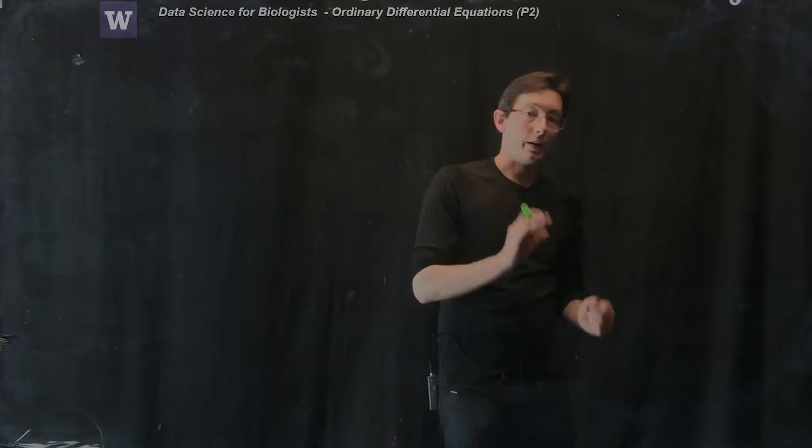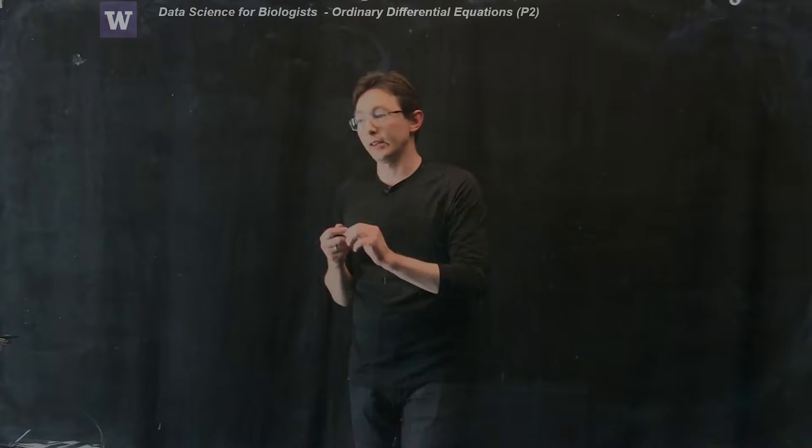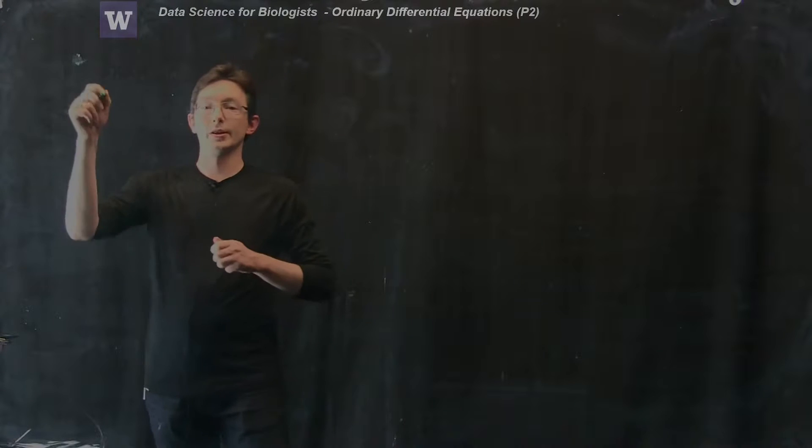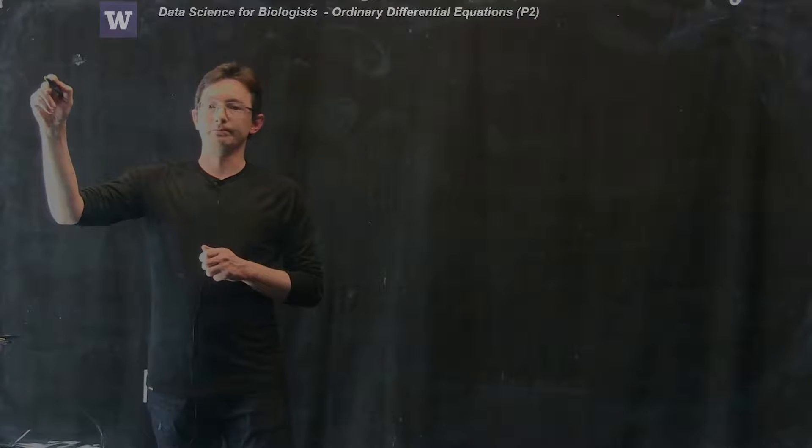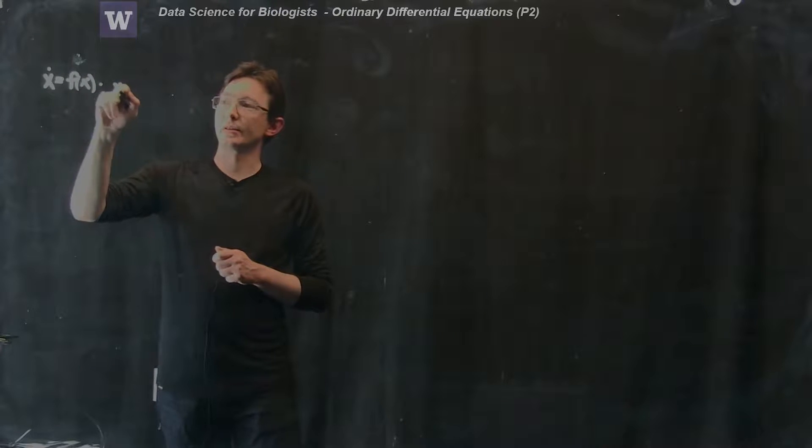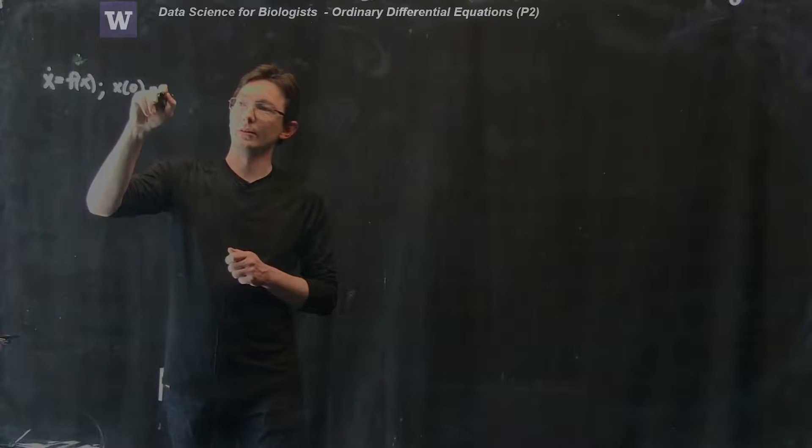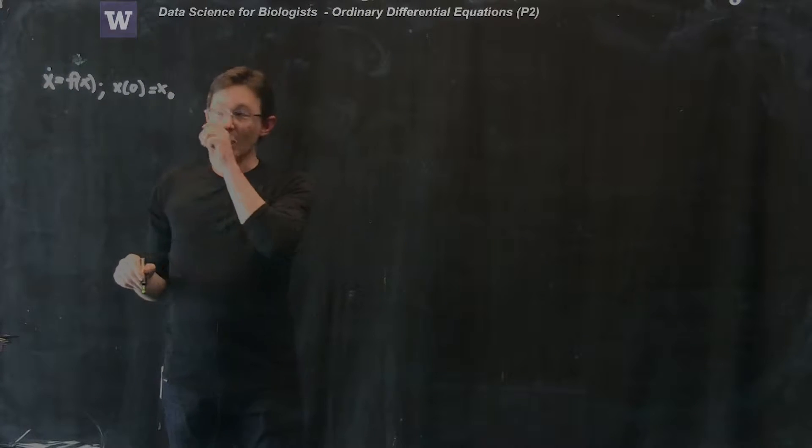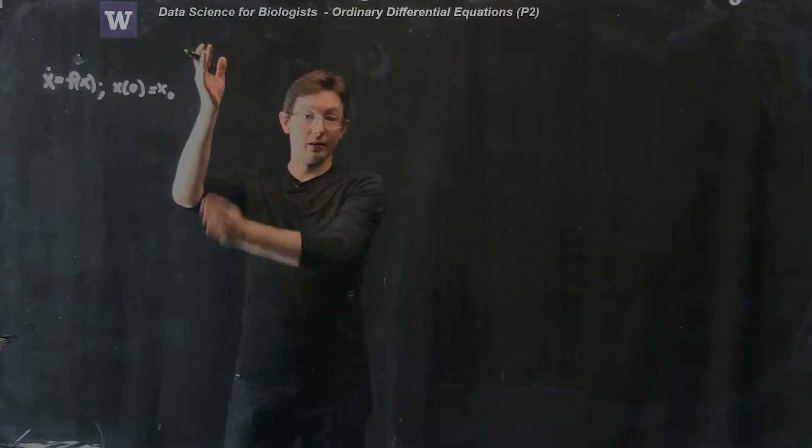We just derived the forward and backward Euler schemes to numerically integrate an ordinary differential equation like x dot equals f of x with some initial condition x at time 0 equals x naught. We're saying that x might be a vector of states of interest.